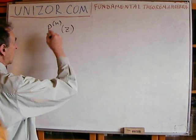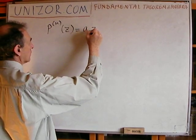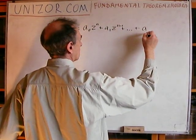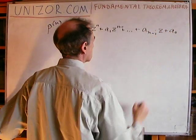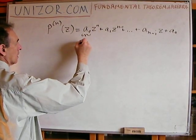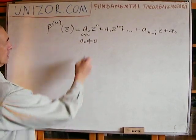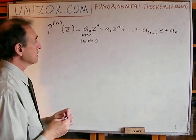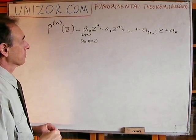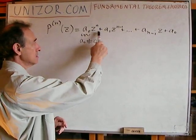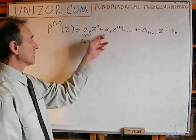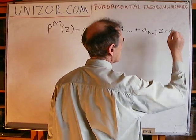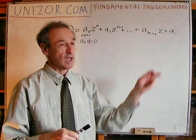So the polynomial of nth degree of the argument z — its general form is: a₀zⁿ + a₁zⁿ⁻¹ + ... + aₙ, where a₀ should not equal zero, because we are claiming that this polynomial is of nth degree, which means the z to the power of n must have a non-zero coefficient. It is assumed that z and all coefficients from a₀ to aₙ are complex numbers.